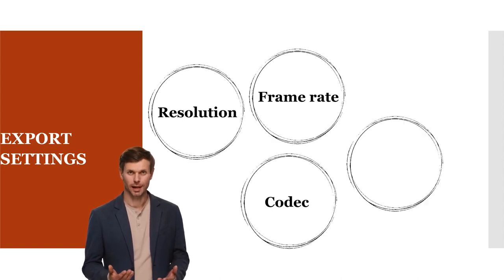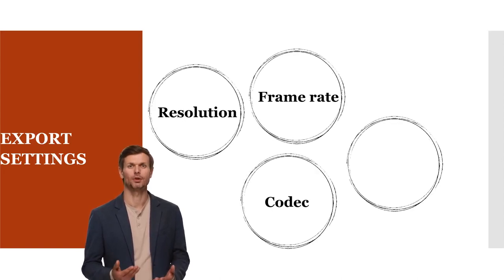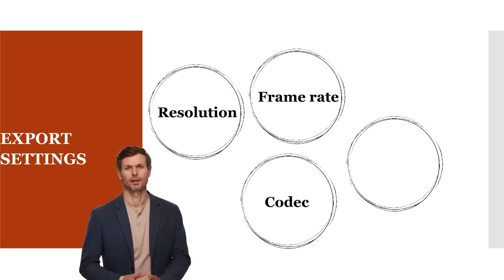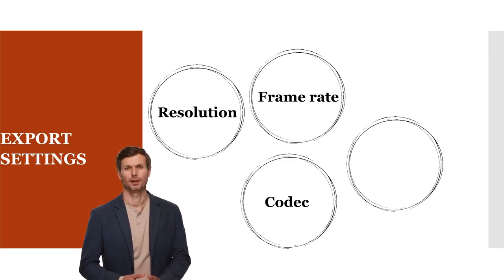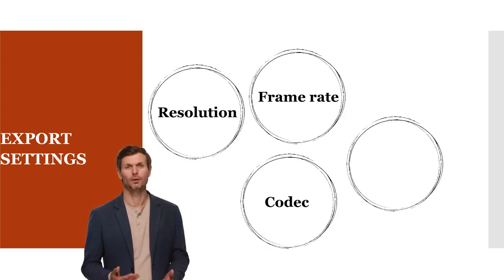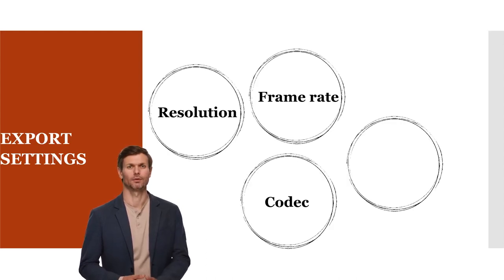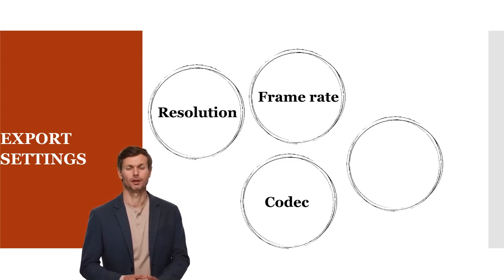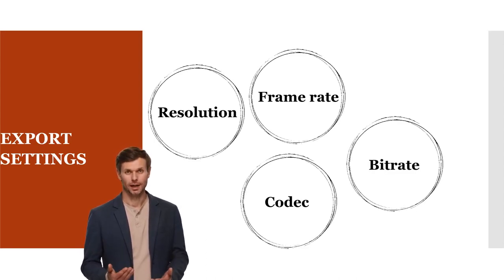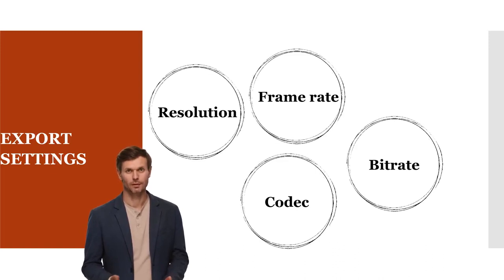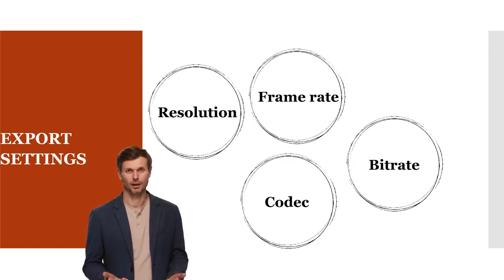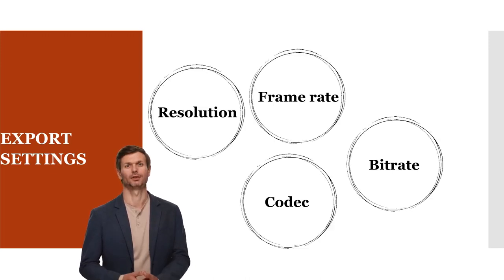Codec: common codecs include H.264, H.265 HEVC, and VP9. Some platforms may also offer options for specific presets or profiles within these codecs. Bitrate: the amount of data used per second to encode the video. Higher bitrates generally result in better quality but larger file sizes.